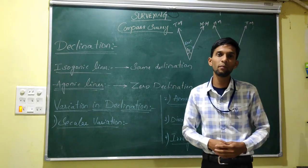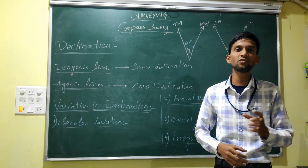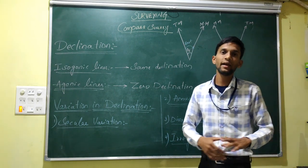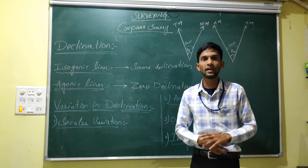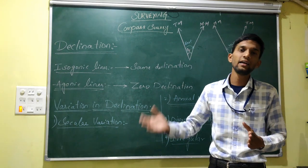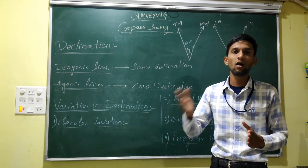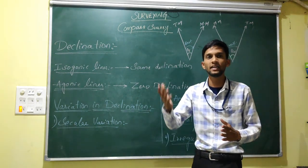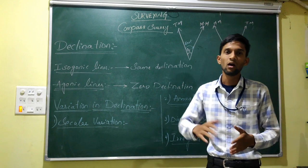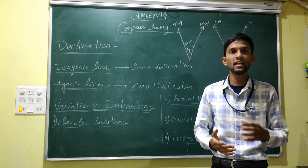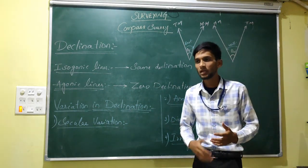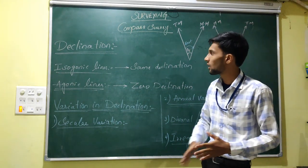The declination is not the same at a given place at all times. For example, if the declination is 5 degrees east at a location in summer, it will not be the same in winter, rainy season, or in other years — such as 2019 or 2020. It will either reduce or increase.